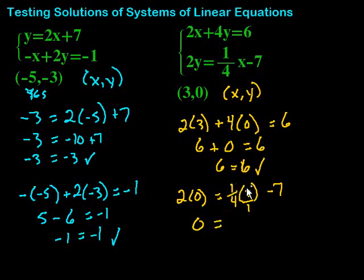So, we have 0 equals 1 fourth times 3. Well, to multiply fractions, remember we multiply straight across. So, 1 times 3 is 3. 4 times 1 on the bottom. So, we have 3 fourths minus 7. So, we have 0 equals 3 fourths minus 7 would be negative 6 and 1 fourth.